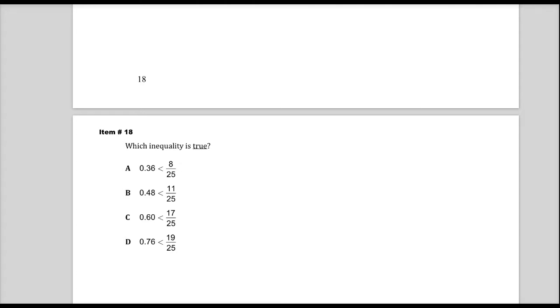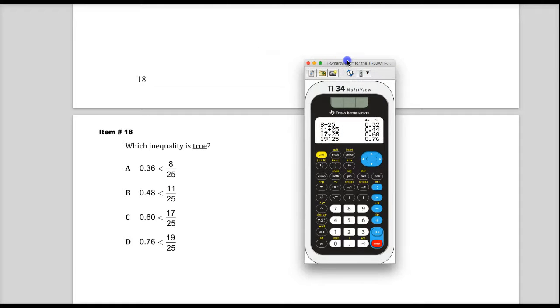So basically it's saying in which situation is the decimal value here less than the fraction value. There are a few ways that you could do this. The quickest way, if you have calculator access, is to convert everything into a like group and then just look.